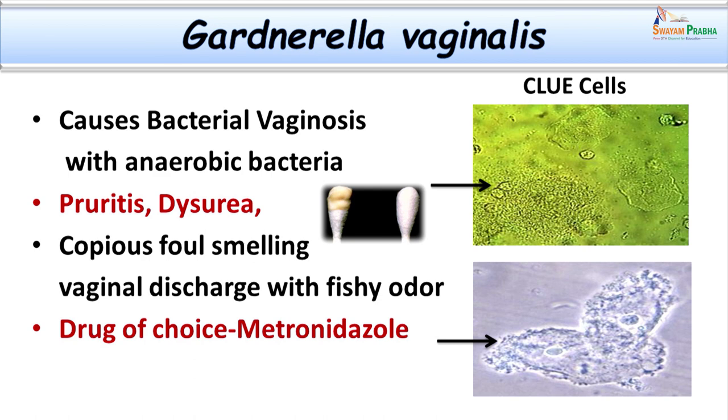So far we have studied some of the important causative agents of non-gonococcal urethritis, starting from the Chlamydia group of organisms, Mycoplasma, Trichomonas vaginalis, and Gardnerella vaginalis. All of them are an important group of organisms to consider, and establishing their diagnosis by laboratory investigations is essential so that specific therapy can be initiated and complications can be prevented.